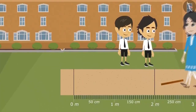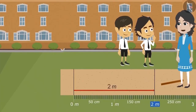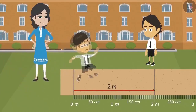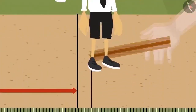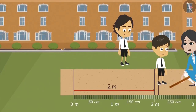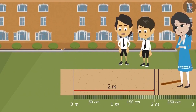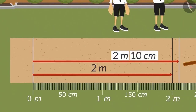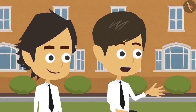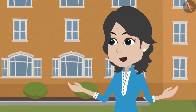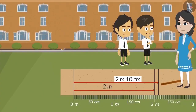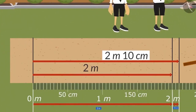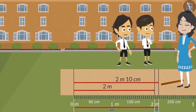Ayushman jumps and the distance is measured as 2 meters. Reyanj then jumps and appears to jump farther. Measuring confirms Reyanj jumped 2 meters and 10 centimeters. The coach explains that length can be written in two units of measurement simultaneously — 2 meters 10 centimeters means he jumped a total of 2 meters and an additional 10 centimeters. Reyanj only jumped 10 centimeters more than Ayushman.